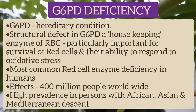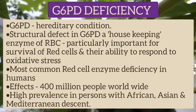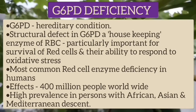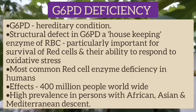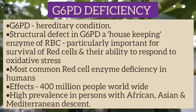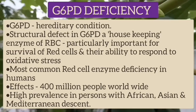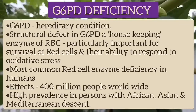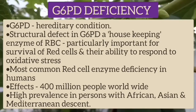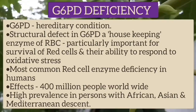G6PD deficiency is a hereditary condition which results from a structural defect in the glucose-6-phosphate dehydrogenase enzyme. This is a housekeeping enzyme and is particularly important for the survival of red blood cells and their ability to respond to oxidative stress. It is the most common red cell enzyme deficiency in humans, affecting about 400 million people worldwide, with high prevalence in persons with African, Asian, and Mediterranean descent.